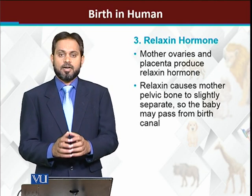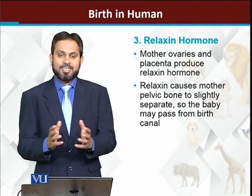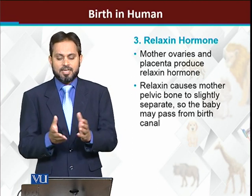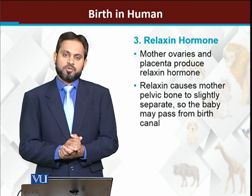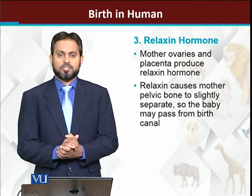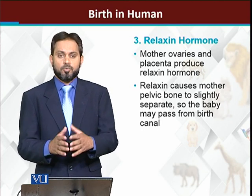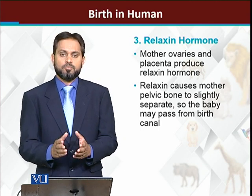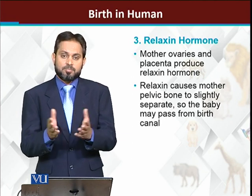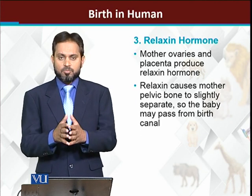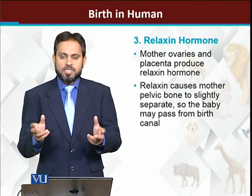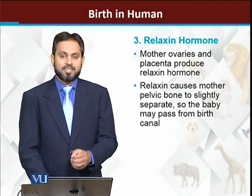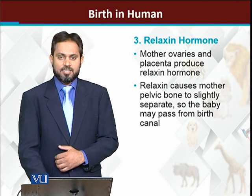Relaxin hormone actually dilates the pubic bones, جس کے وجہ سے the fetus or newborn can come out through the birth canal. اگر bones اپنی position پر رہیں تو normal birth possible نہیں ہوتی۔ بہت سارے cases میں doctors operate کرتے ہیں کیونکہ bones اپنی جگہ سے dislocate نہیں ہوتیں۔ So before birth, the pubic bones must displace slightly to create space so the baby can pass through the birth canal. First hormone is the relaxin, which dilates or dislocates the bones.